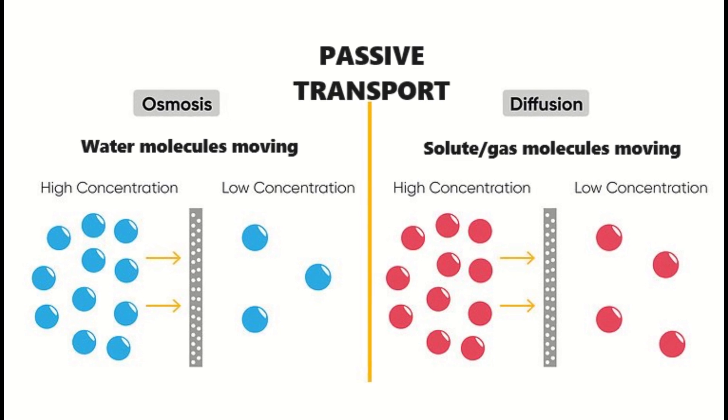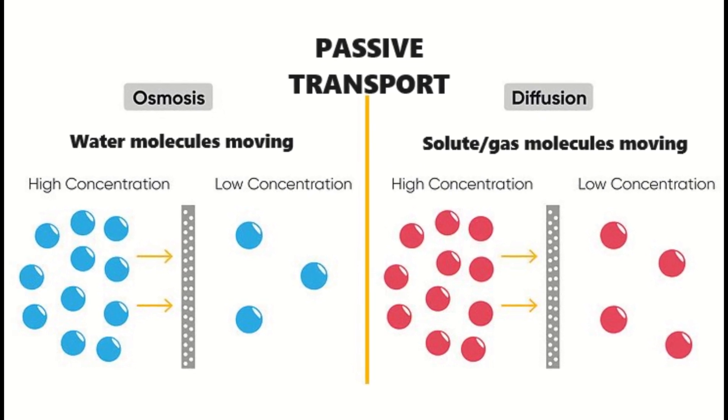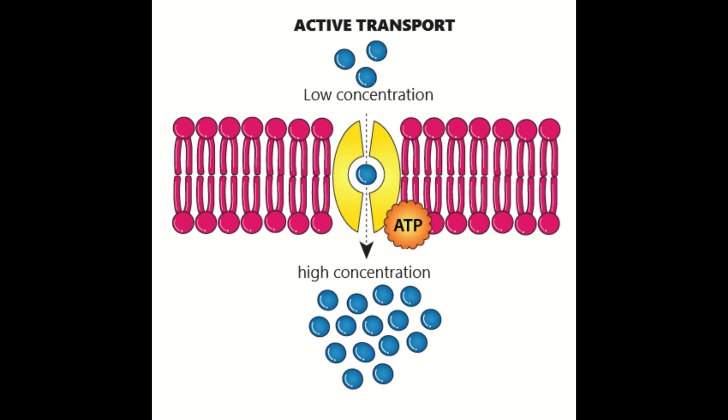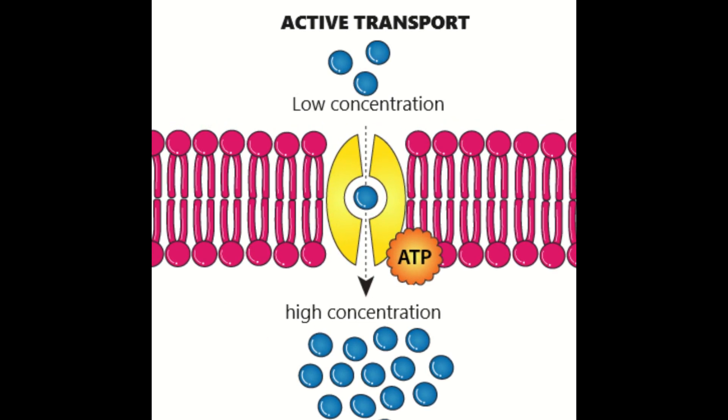So remember, diffusion and osmosis move molecules from high to low concentration while active transport moves molecules from low to high concentration.